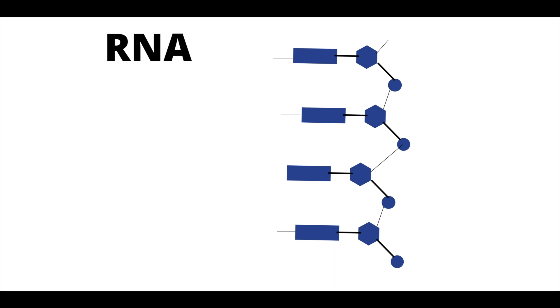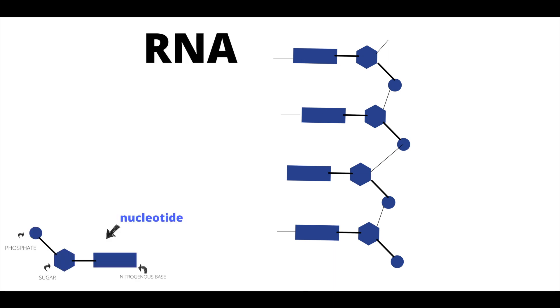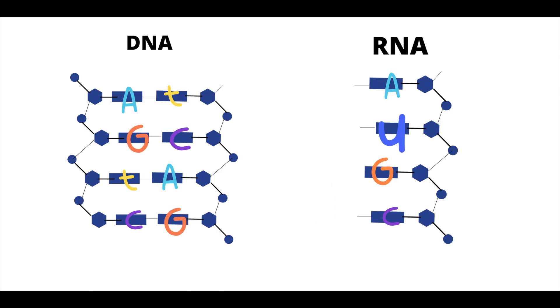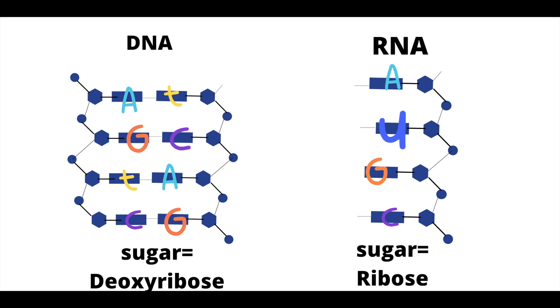RNA comes in a single strand with the same structure: phosphates and sugars on the outside, nitrogenous bases inside. The major difference is that RNA replaces thymine with uracil. Another difference is the sugar: DNA uses deoxyribose, RNA uses ribose—hence deoxyribonucleic acid and ribonucleic acid.